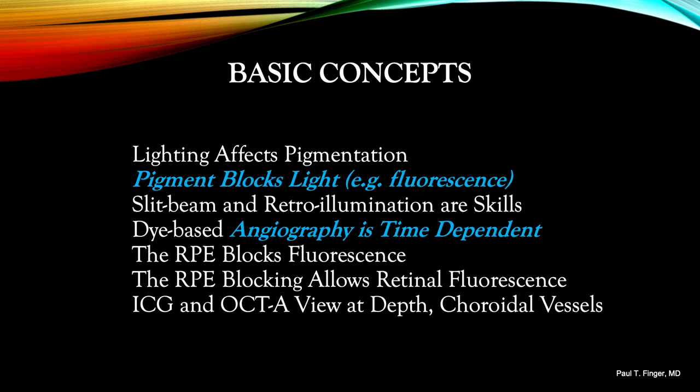The second foundational element is: pigment blocks fluorescence. By definition, pigment blocks light and thus obscures what is beneath. The dominant intraocular pigment is the retinal pigment epithelium and the iris pigment epithelium, called RPE and IPE respectively. It is the retinal pigment epithelium that allows fluorescence angiography by separating the retinal from the choroidal circulation, thus allowing visualization of intraretinal microangiopathy.